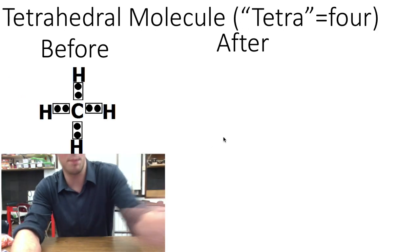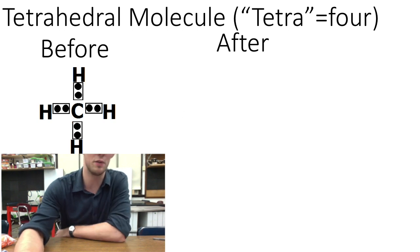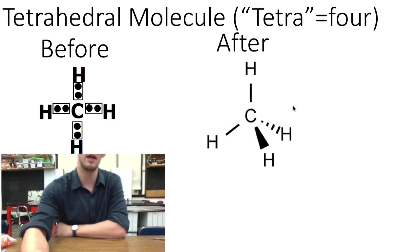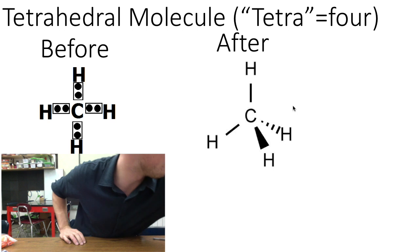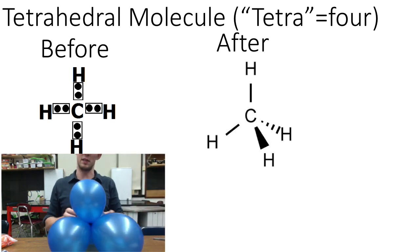In the last shape is a tetrahedral molecule, which occurs when a central atom is bonded to four different elements. Tetrahedral molecules get their name from the root tetra, which means four.